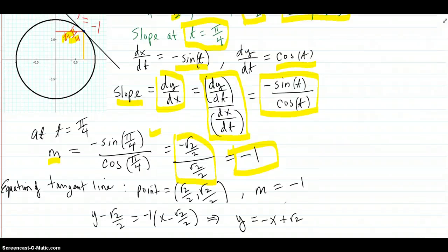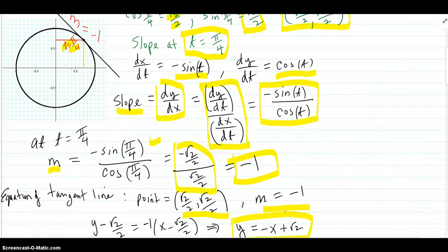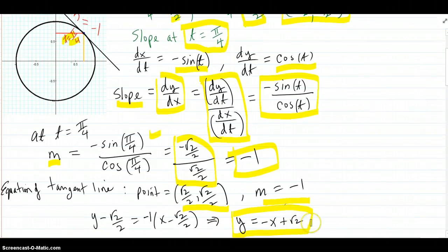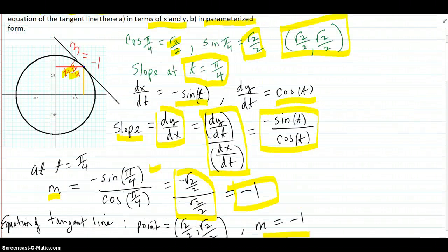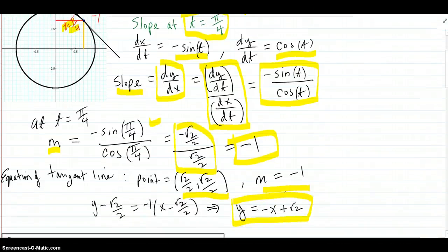We have our point and our slope, so the point-slope formula yields this line. It has a y-intercept of square root of 2, and sure enough, right up here it would have square root of 2 over there, because this is 1. So that's perfect.